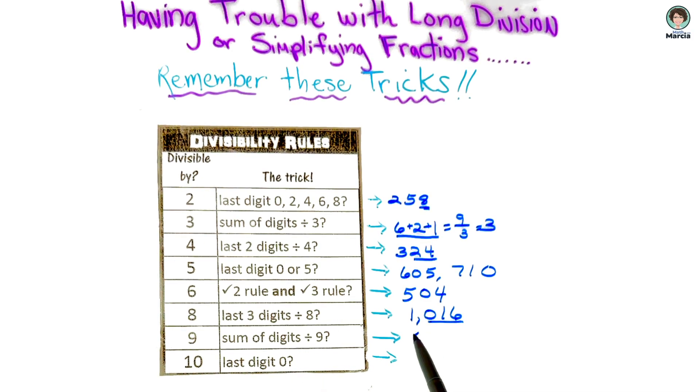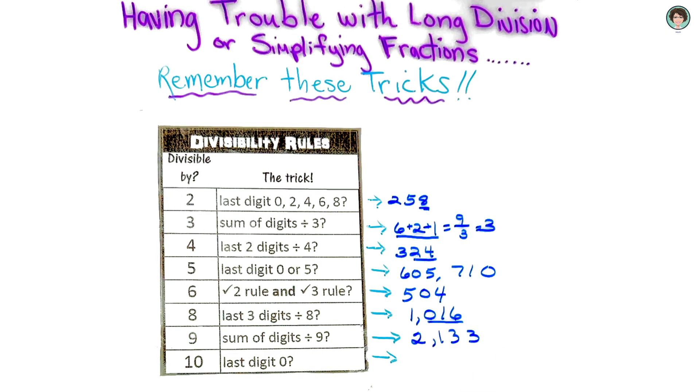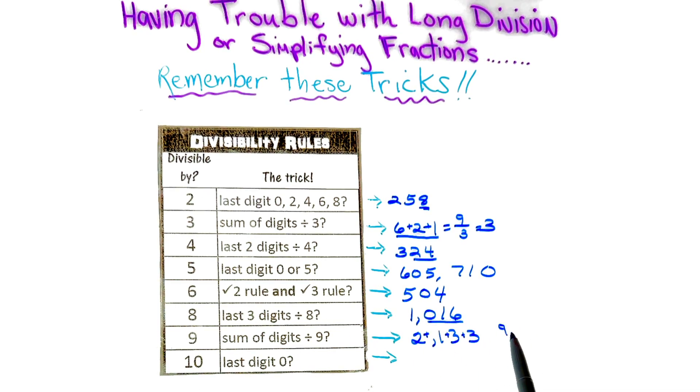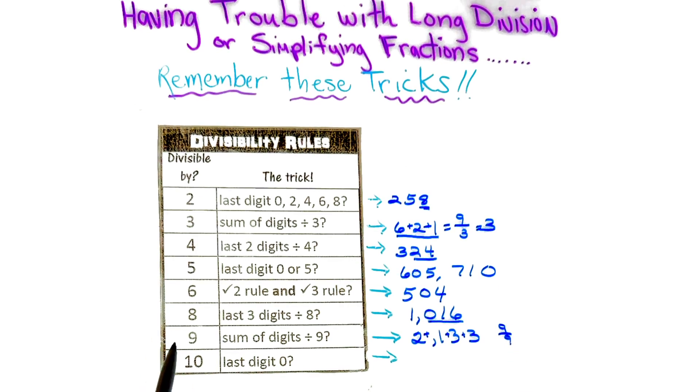And so I'm just going to write 2,133. And when I look at that, if I add these together, we do get 9 and 9 is divisible by 9. So we know that 2,133 can be divided by 9.